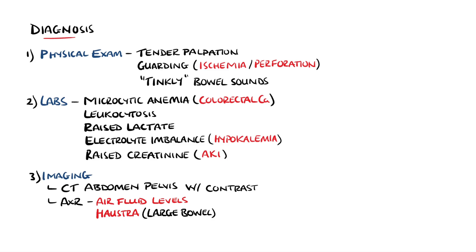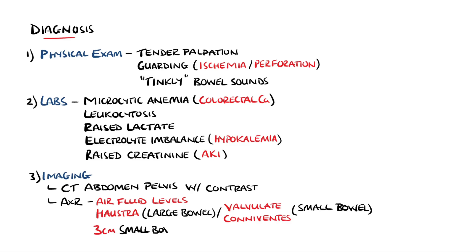These bands are known as the haustra of the large bowel, which do not go all the way across the bowel, while the valvulae conniventes in the small bowel do. However, this may vary with position and exposure, and therefore it is not perfectly reliable. There is also a rule of sizes, where the small bowel is normally smaller than 3 cm, the large bowel less than 6 cm, unless at the cecum, which is less than 9 cm.